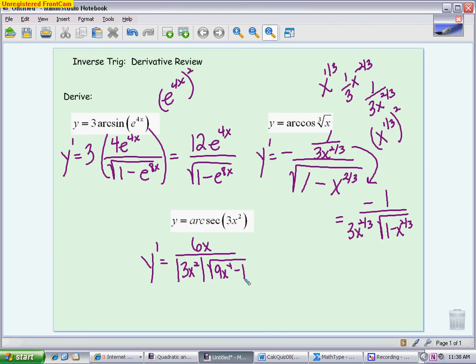So you could leave it like this. You could go even further and reduce this. You could even reduce your x and your x squared. So if you really want to get a very simplified answer, you could write it as 2 over x times the square root of 9x to the fourth minus 1.